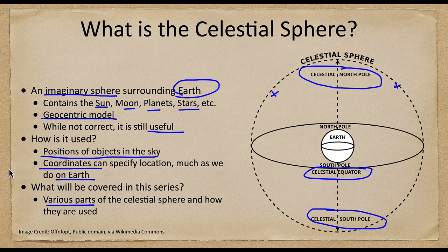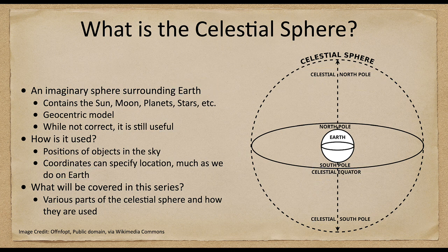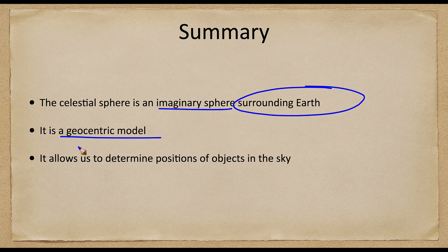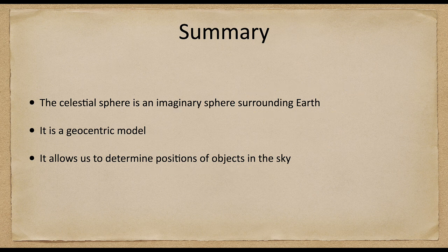So let's finish up with our summary. What we've looked at is, first of all, that the celestial sphere is an imaginary sphere that surrounds Earth. It is based on a geocentric model — it is very Earth-centric, where we are at the center and everything appears to move around us. But since that's how everything does appear to move, it is actually very useful for determining things like positions of objects in the sky. So that concludes this discussion on introducing the celestial sphere.